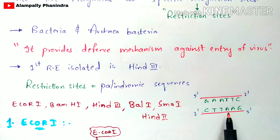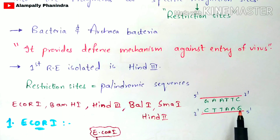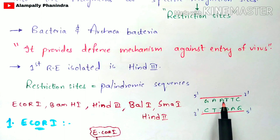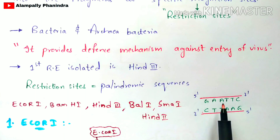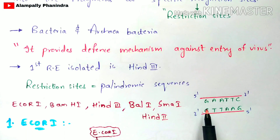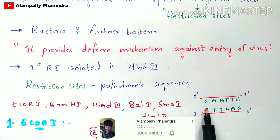Even if you read the second strand in the 5' to 3' direction, the sequence will be the same — GAATTC — but opposite to it, making it complementary. These opposite sequences that are the same when read 5' to 3' on both strands are called palindromic sequences.